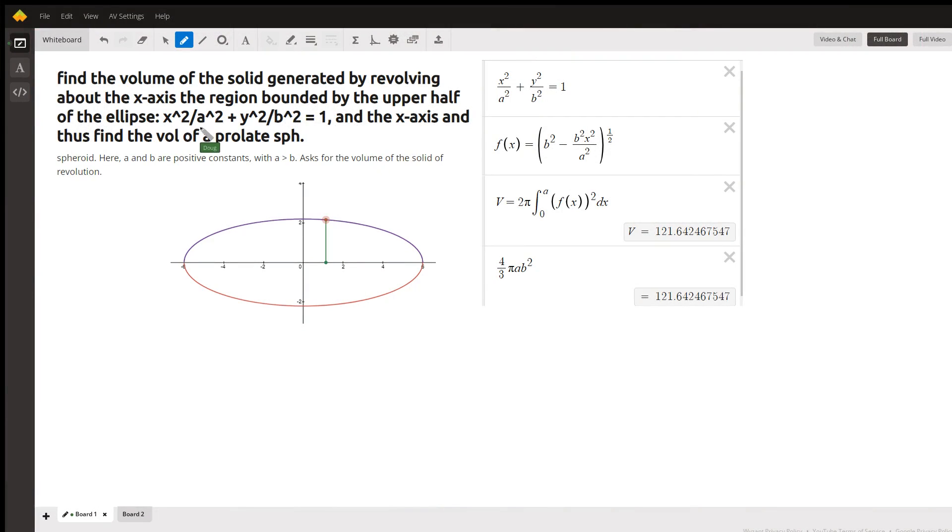Okay, you're given the general equation of an ellipse centered at the origin, where the length of the major axis is 2a and the minor axis is 2b. We're going to revolve the top half of that ellipse around the x-axis to create a prolate spheroid, and we want to find a formula for the volume.